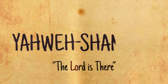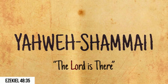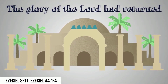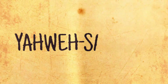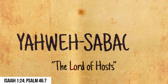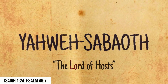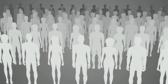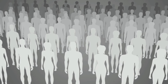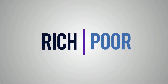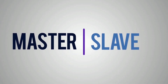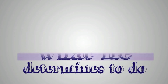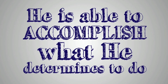Yahweh Shema — The Lord is there. The name ascribed to Jerusalem and the temple there, indicating that the once-departed glory of the Lord had returned. Yahweh Sabaoth — The Lord of Hosts. Hosts meaning hordes, both of angels and of men. He is the Lord of the host of heaven and of the inhabitants of the earth, of Jews and Gentiles, of rich and poor, master and slave. The name is expressive of the majesty, power, and authority of God, and shows that he is able to accomplish what he determines to do.